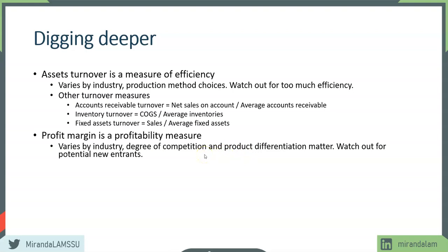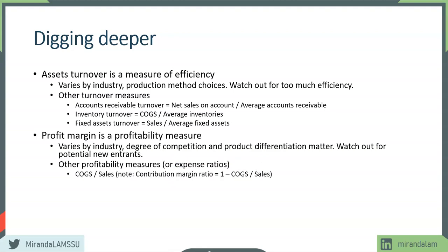If a company is enjoying very high profit margin, one thing to watch out for is potential new entrants. The current degree of competition may be low in a new industry, so the company enjoys high profit margin. As new entrants come into the market, that will often depress profit margin. Other useful ratios related to profit margin include contribution margin or cost of goods sold ratio — cost of goods sold divided by sales — and one minus that is the contribution margin, showing how much the company generates per dollar of sales.